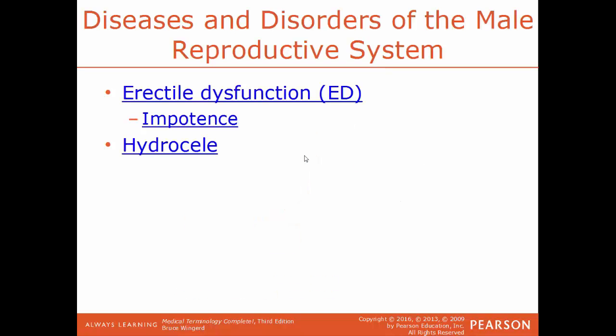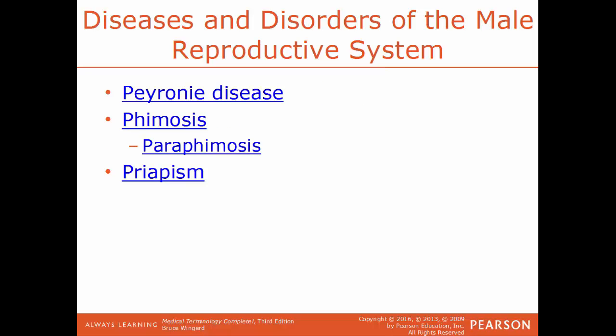Erectile dysfunction, or ED, is the inability to maintain an erection sufficiently. A form of erectile dysfunction is impotence, where the male cannot achieve or maintain an erection or the ability to ejaculate. Hydrocele is an accumulation of fluid within a body sac — in this system, a buildup of fluid around the testicle. Peyronie disease is where fibrous scar tissue develops inside the penis, causing a curved and painful erection.